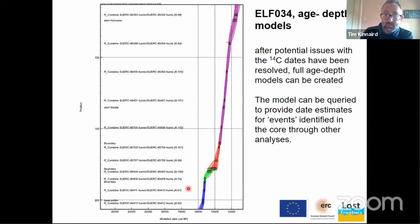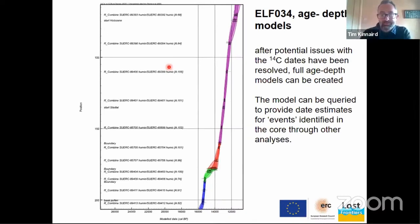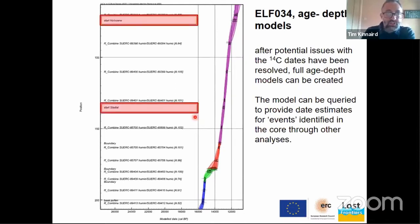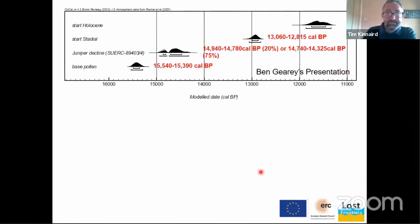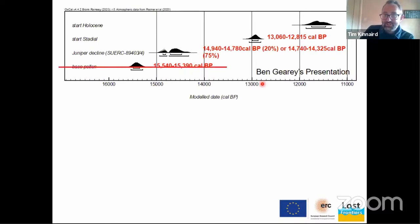Here's the age-depth model for 34. What's really great about this is it removes us from thinking about individual constraints on certain horizons and allows us to talk about chronology for the whole core. We can query this model to date specific events. For example, referring back to Ben's presentation, we want a date for the start of the Holocene and the start of the Stadial - and we have a date for the start of the Stadial in 34 of between 13,000 and 12,000. We also realized we had mistaken the description, taking the base of the peat to be the base of pollen, so we can exclude that outlier date.